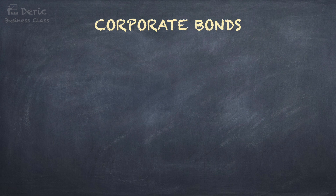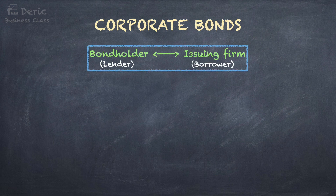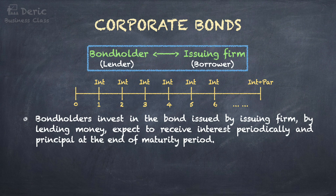A corporate bond is one of the most common types of bonds. When you buy bonds, you are basically lending money to the company. In other words, the issuing firm borrows money from you by selling bonds. So, the bondholder is the lender and the issuing firm is the borrower. Bondholders invest in the bond issued by the issuing firm by lending money, so bondholders may expect to receive interest periodically — semi-annually or annually — and receive principal at the end of the maturity period.